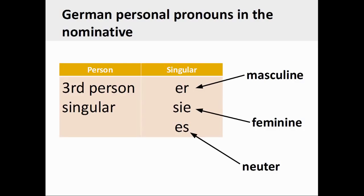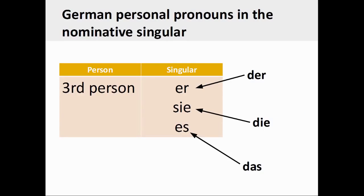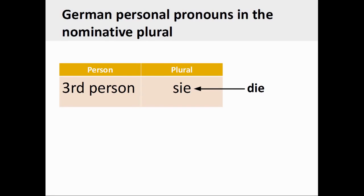In German, the grammatical gender or number of a noun determines the personal pronoun that gets used. The personal pronouns that manifest gender are: er, masculine; sie, feminine; and es, neuter. The gender of the personal pronoun can therefore be matched to the gender of the German noun, which is manifested by its definite article — er, masculine, third person singular; sie, feminine, third person singular; and es, neuter, third person singular. When referring to people or living things with a biological gender, the appropriate matching personal pronoun is used. For plural nouns, the number of the noun determines its personal pronoun: sie, third person plural.